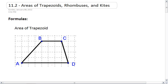Section 11.2, Areas of Trapezoids, Rhombuses, and Kites. We have a lot of new area formulas to look at here. We're going to start with a trapezoid.